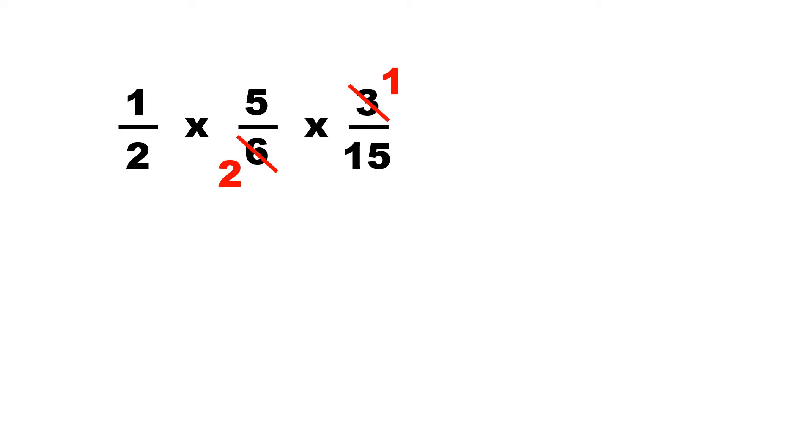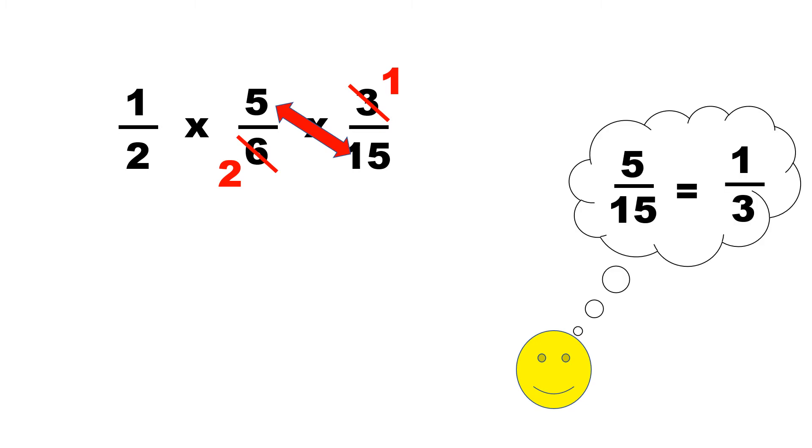We can also cancel diagonally the 5 and the 15, and if we reduce 5/15, it's going to be 1/3. So, cross out the 5, it's going to be 1, and cross out the 15, and put a little 3.